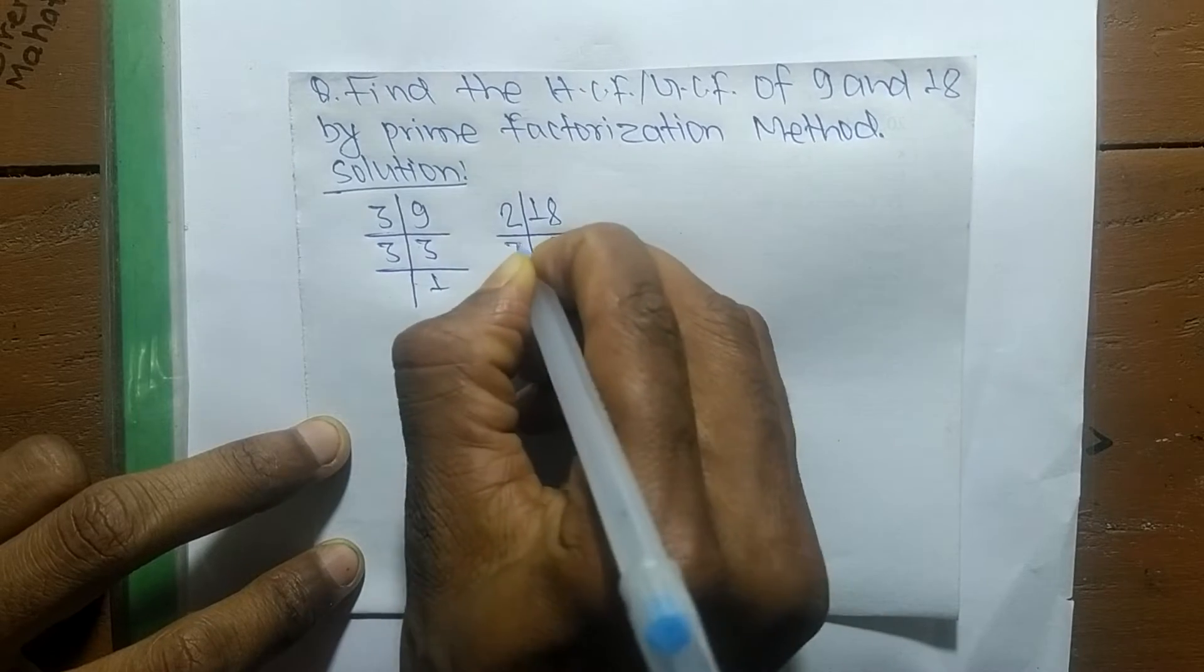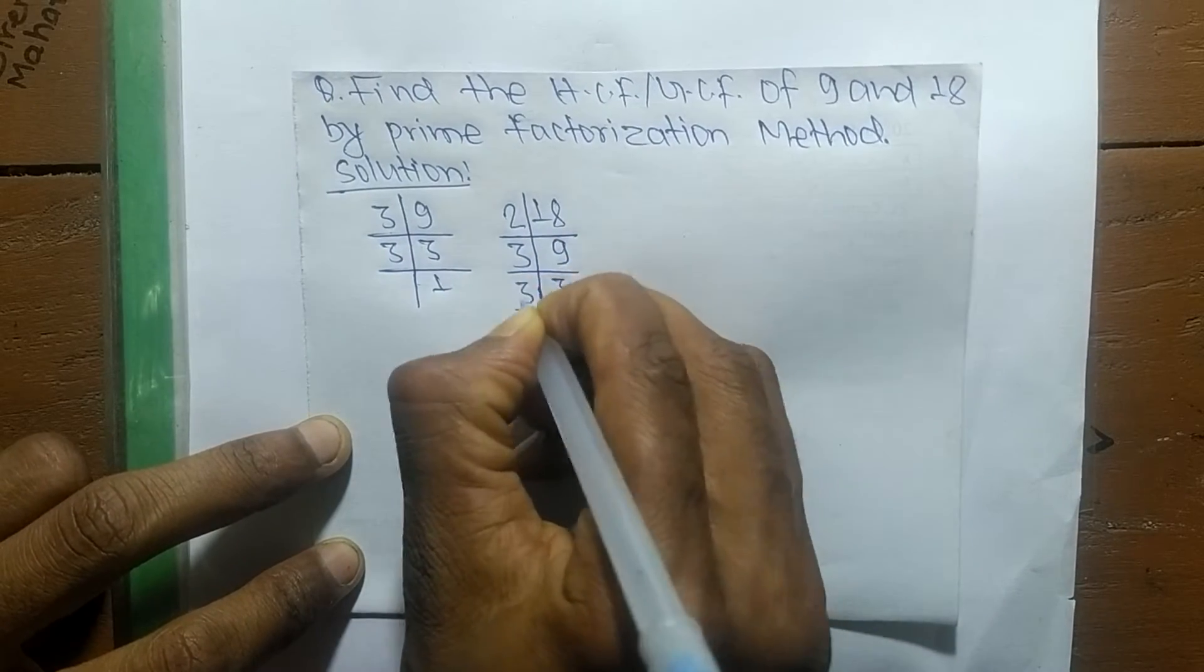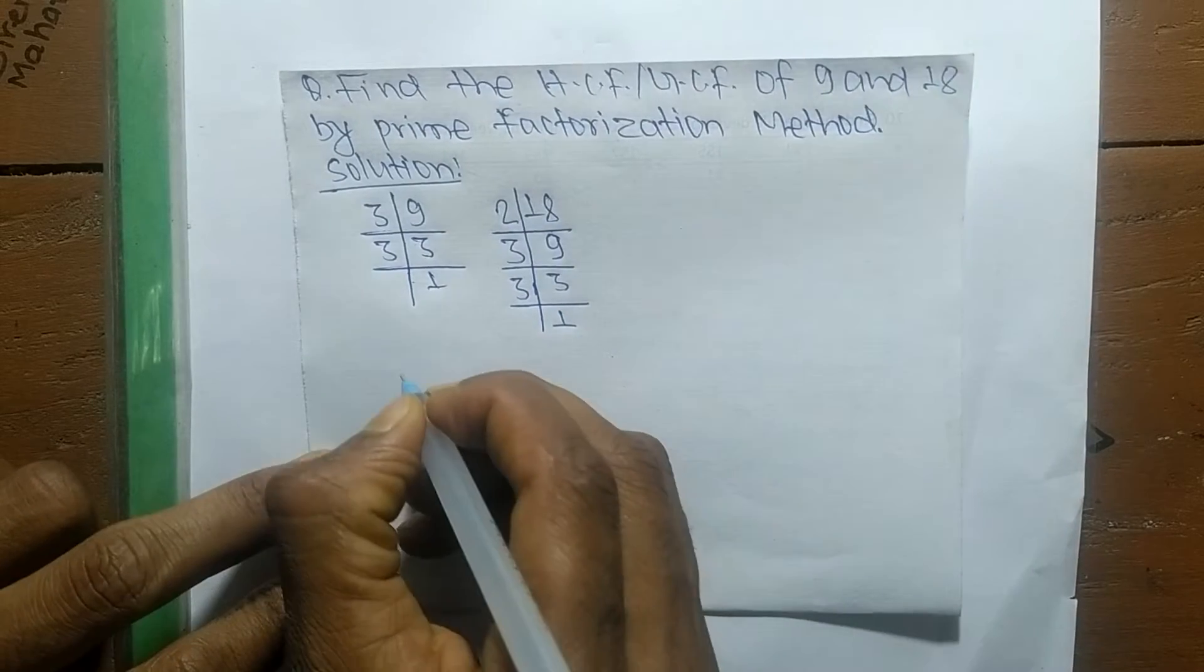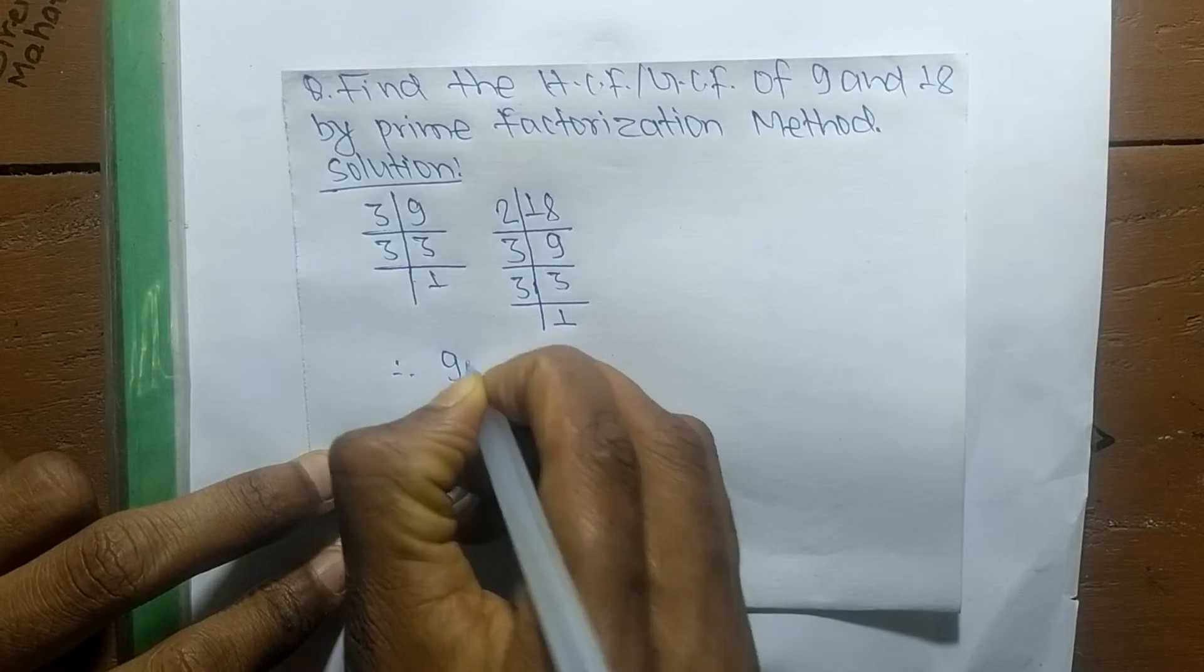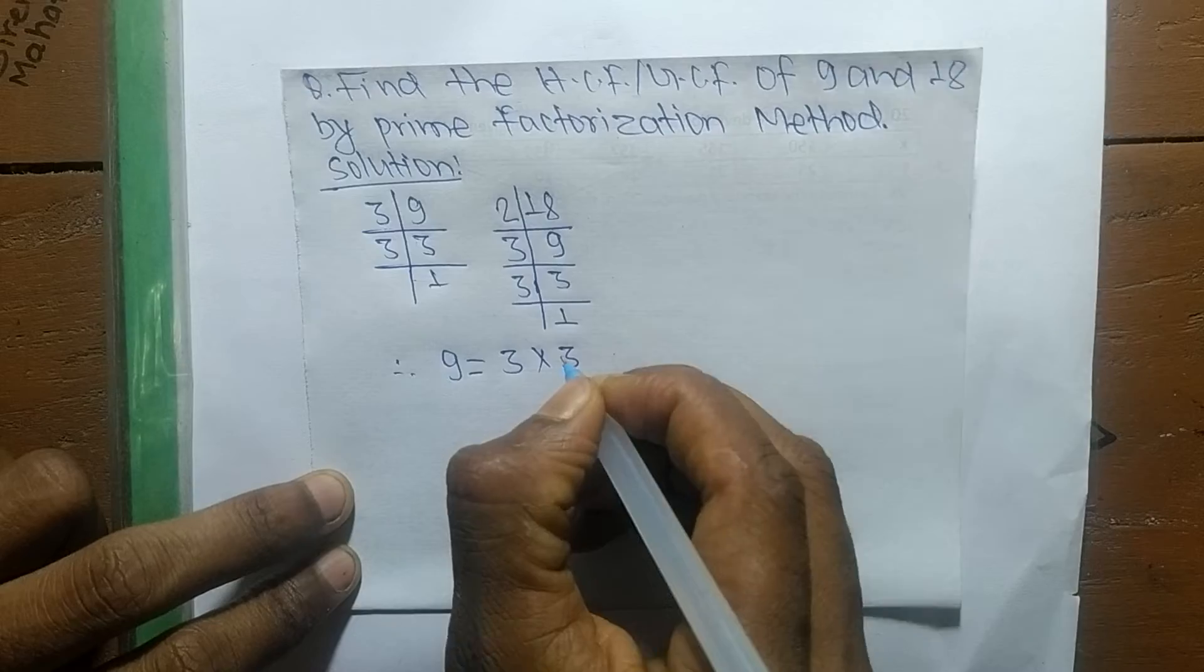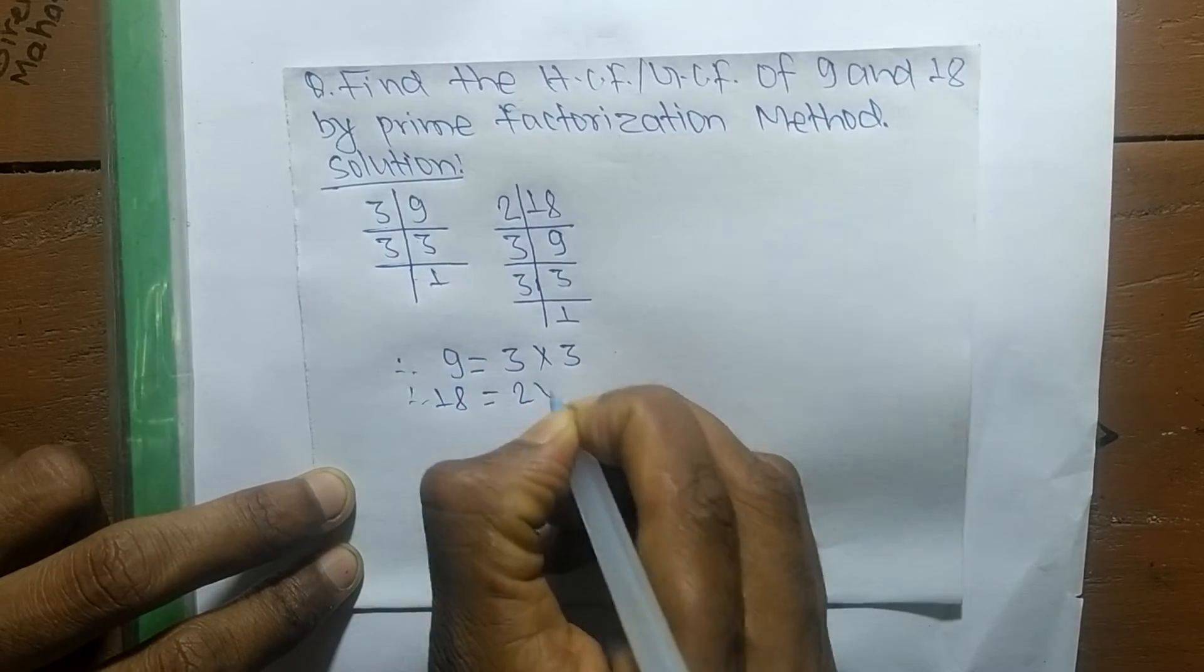And 3 times 3 equals 9, like 3 times 1 equals 3. So from these prime factors, we can write 9 equals 3 times 3. Likewise, 18 equals 2 into 3 into 3.